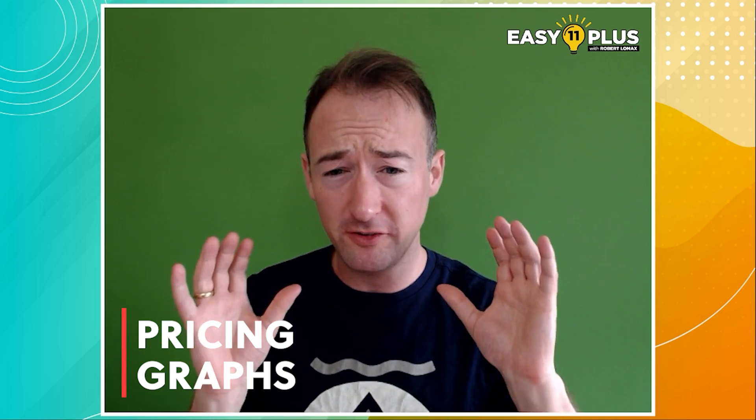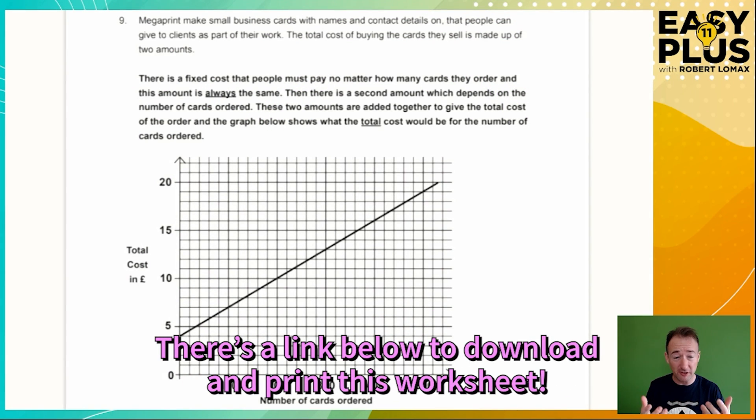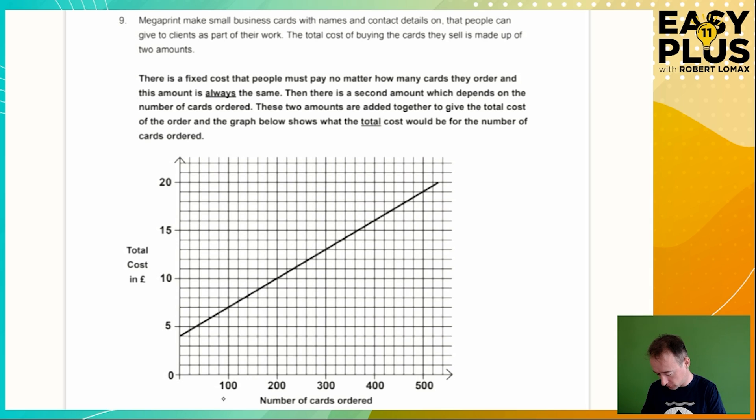Welcome to this Easy 11 Plus short lesson on pricing graphs. It's a really common exam topic and once you've done one of these questions you can do pretty much any of them. This is a pricing graph that shows how much it costs in total to order a certain number of business cards from Megaprint. Along the bottom we've got the number of cards ordered and up the side we have the cost for ordering that number of cards. We've got a line that goes up here which shows the relationship between the number of cards axis and the total cost axis.